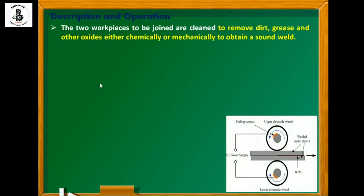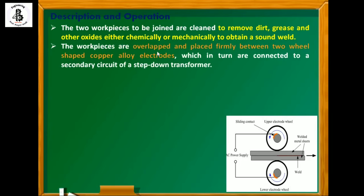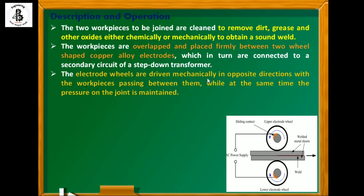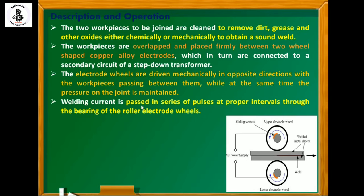The two workpieces to be joined are cleaned to remove dirt, grease, and oxides — either chemically or mechanically — to obtain a sound weld. The workpieces are overlapped and placed firmly between two wheel-shaped copper alloy electrodes, which are connected to a secondary circuit or step-down transformer. The electrode wheels are driven mechanically in opposite directions as the workpiece passes through, while pressure on the joint is maintained. Welding current is passed in a series of pulses at proper intervals through the bearing of the roller electrode wheels.